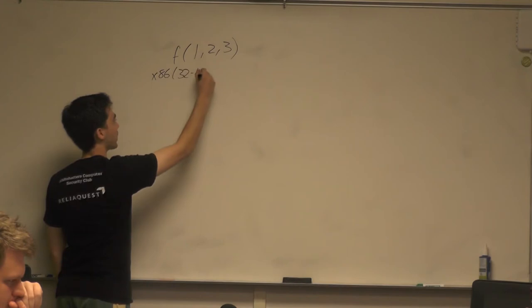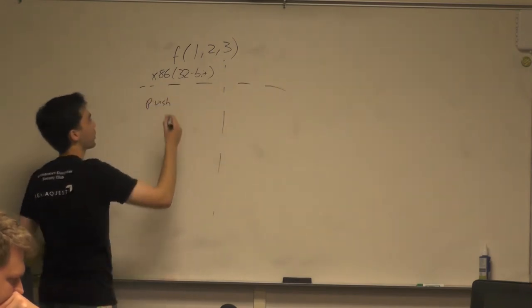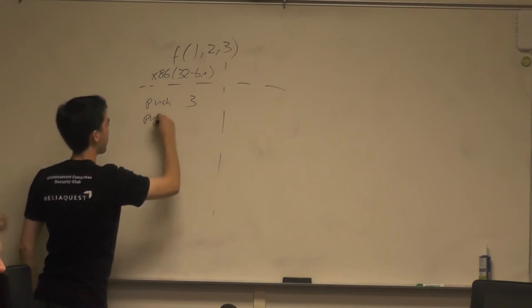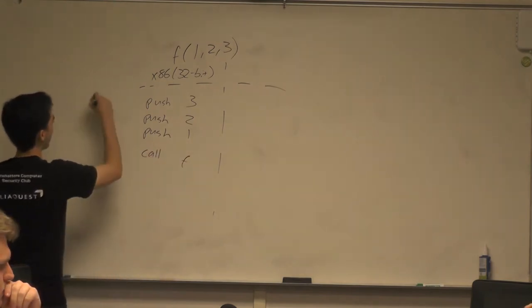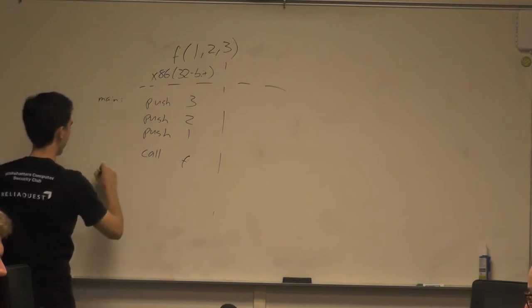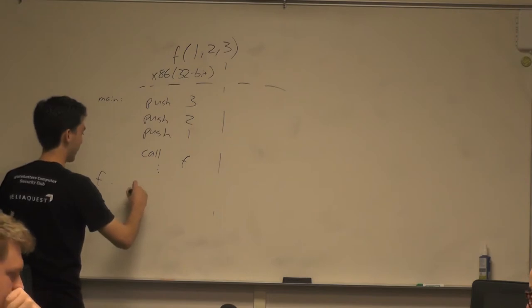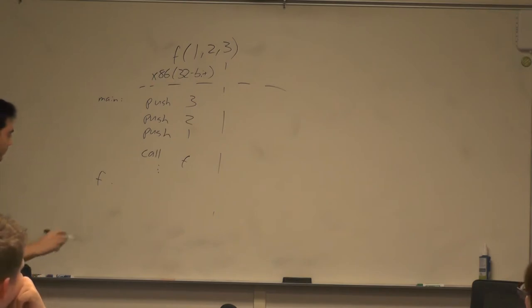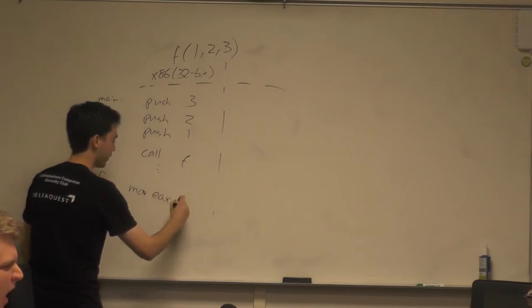Just to recap: on x86, which is a 32-bit architecture, we push arguments right to left. So we push 3, push 2, push 1, and then call f. That's our main function, and then it might have more code. In f, it does whatever it needs to do with these arguments on the stack. To return a value, we use EAX as the return value.